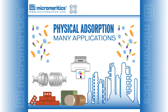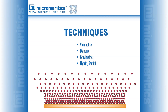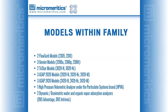Gas adsorption is commonly used for the characterization of materials in many applications. This characterization yields important surface area and porosity information in a very short time, a benefit critical to many industrial processes. Almost 50 years ago, Micromeritics Instrument Corporation manufactured its first surface area analyzer. Today, employing four different physical adsorption analytical techniques, Micromeritics offers seven product families containing 16 different physisorption products.